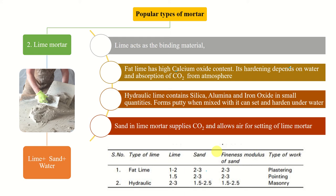Sand in lime mortar supplies carbon dioxide and allows air for setting of lime mortar. The proportions: for fat lime, 1–2 parts lime to 2–3 parts sand, fineness modulus 2–3, passing through 4.75 mm sieve. These proportions apply for plastering and pointing. For hydraulic lime, these are the proportions, and it is mainly used for masonry.